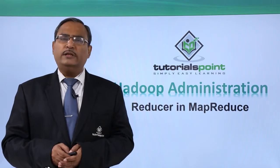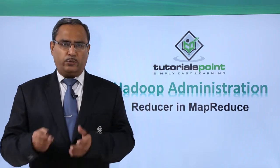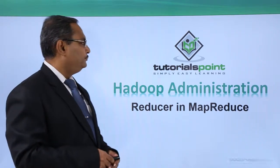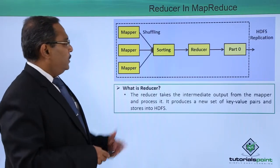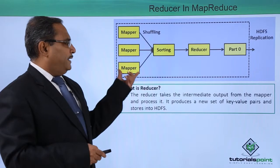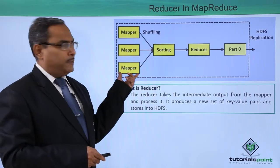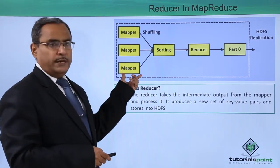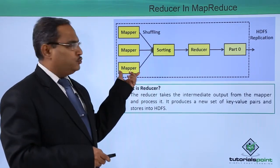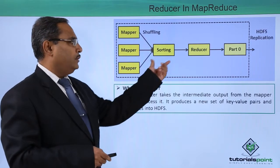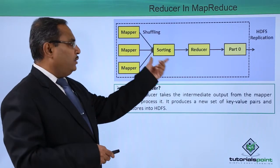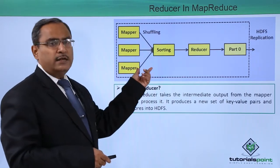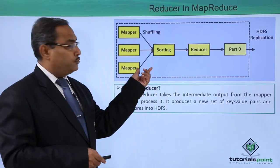So let us discuss this topic with one diagram. Here you can find that we are having multiple mappers, and the output of those mappers will be coming to this sorting step. And while doing the sorting, here we will also be having the shuffling.